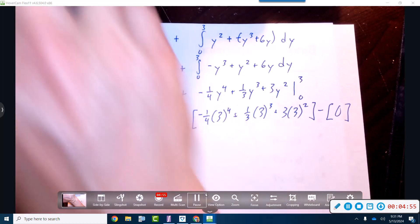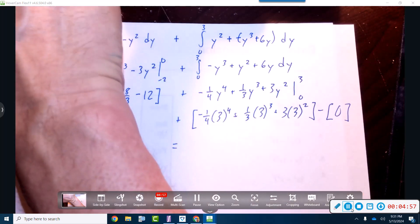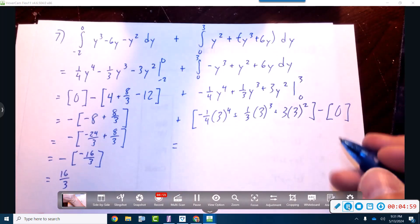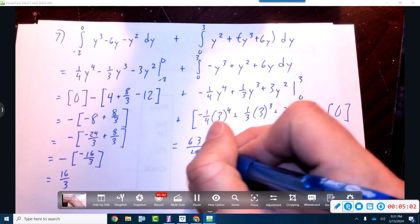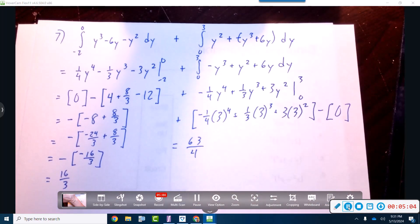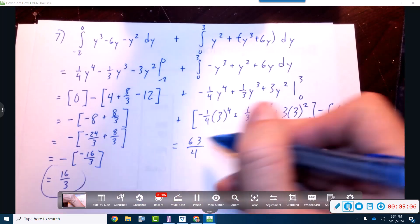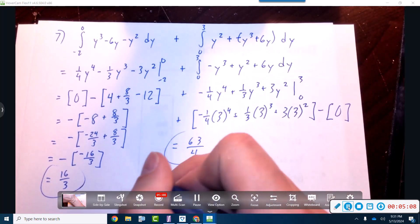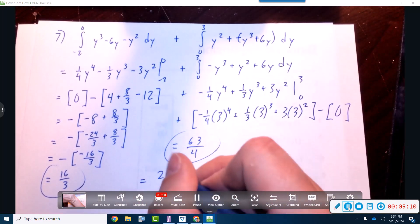I'm going to pause. Alright, that's going to be 63 over four. So guess what? These two added together are, yes you are correct, 253 over 12.